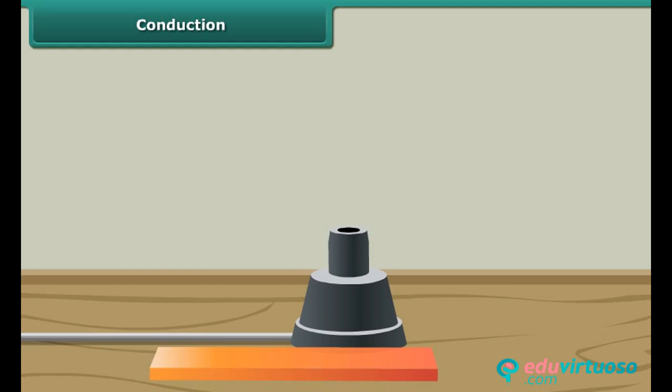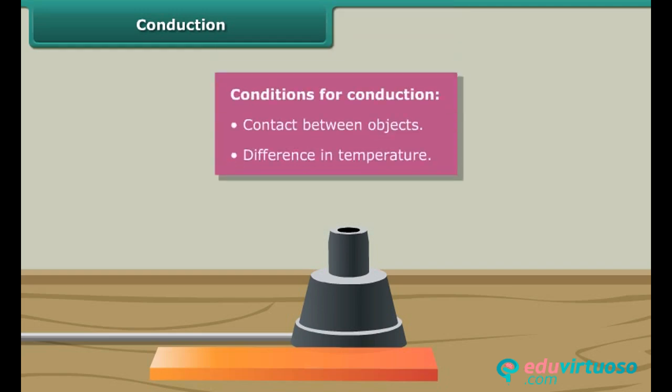There are two important conditions for heat to be conducted from one body to another. These are: the two objects should be in contact, and their temperatures should be different.